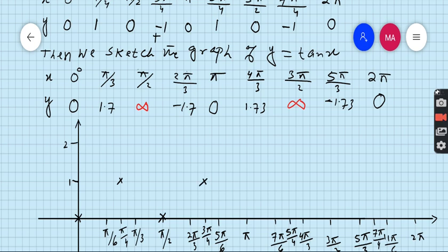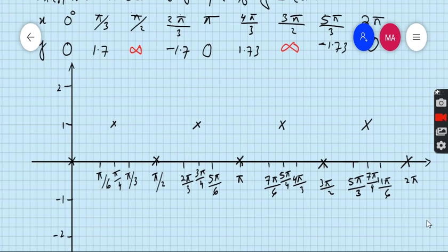Then 5 pi by 4 the value is 1. Then 3 pi by 2 the value is 0. Then 7 pi by 4 the value is minus 1 but it should be plus 1. And then 2 pi the value is 0. So all those points which are below x axis should be reflect to positive x axis. Join these points.